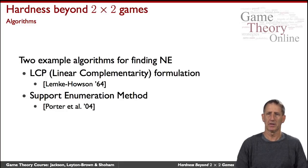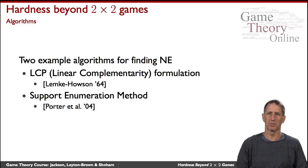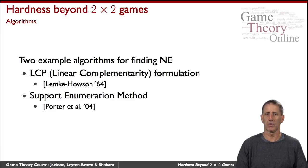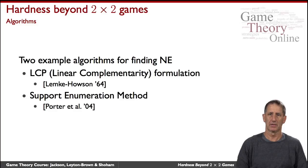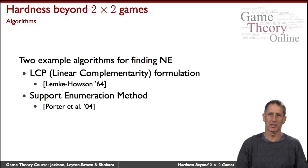On perhaps the other extreme is what is called the support enumeration method, a more recent procedure that doesn't have as deep an insight into the structure of the problem. It says simply: if you fix the support of the strategies of the players — those actions that are played with non-zero probability — then the problem becomes very easy. You can set it up as a linear program and solve it efficiently. The challenge is that there are an exponential number of supports to explore, so the trick is to explore them cleverly using clever heuristics — that's called support enumeration.